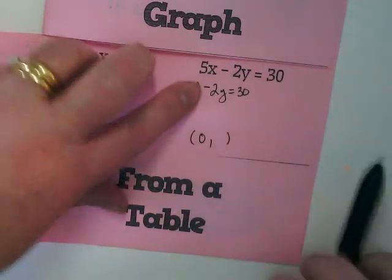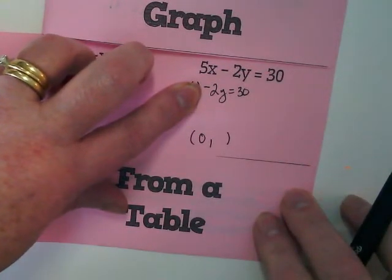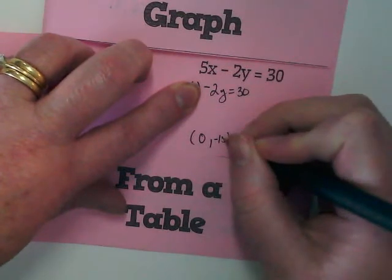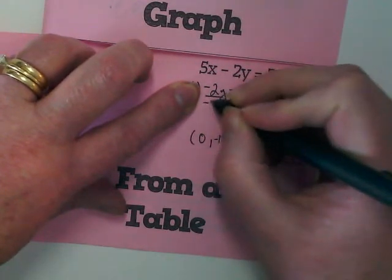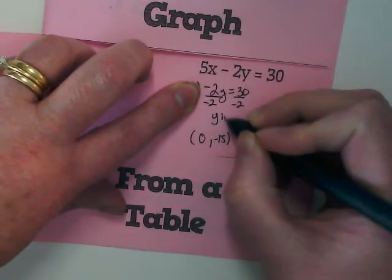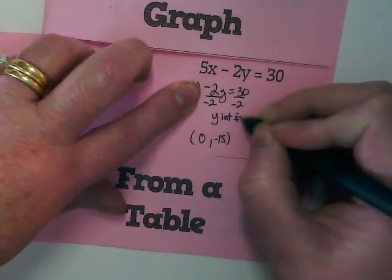So I can cover that up, and picture a one-step equation, can't I? What's 30 divided by negative 2? Negative 15. That's my y. So my y-intercept is negative 15.